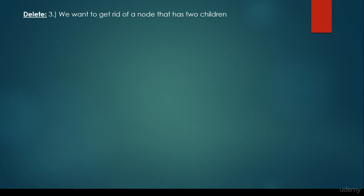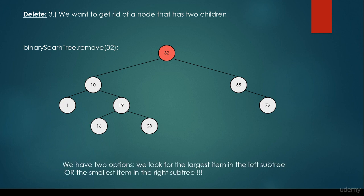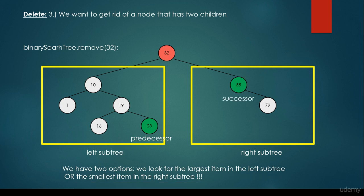This is the most complex case: when we want to get rid of a node that has two children. We have this binary search tree and we would like to remove 32. We come to the conclusion that this is the root node, so we have two possibilities. First, we look for the largest item in the left sub-tree — this is called the predecessor. 23 is the predecessor of 32. Or we find the smallest item in the right sub-tree — this is the 55, called the successor. So 55 is the successor of 32.